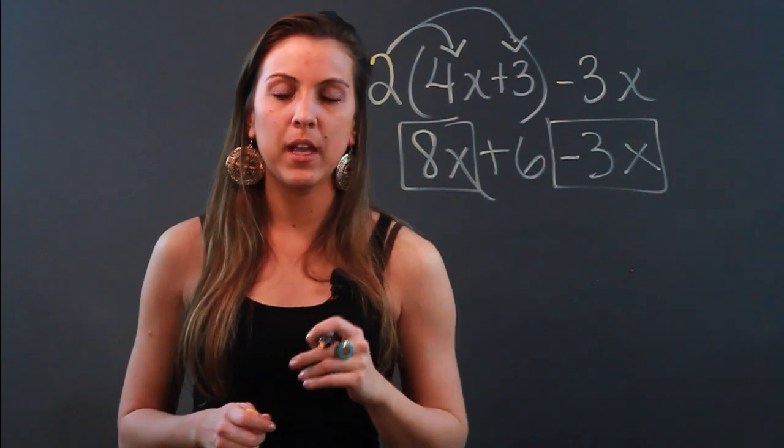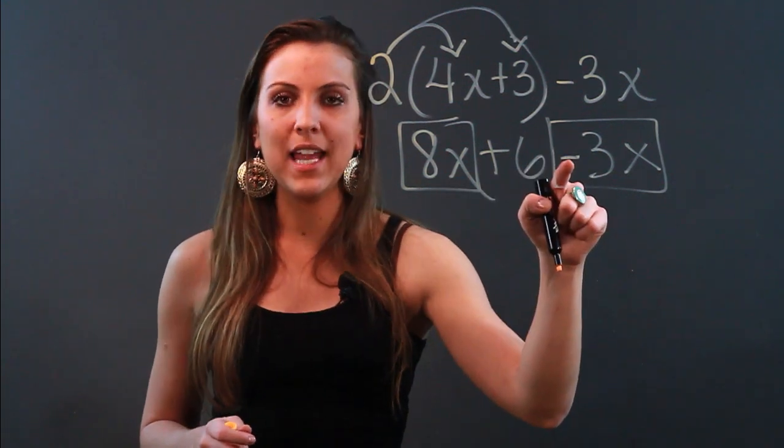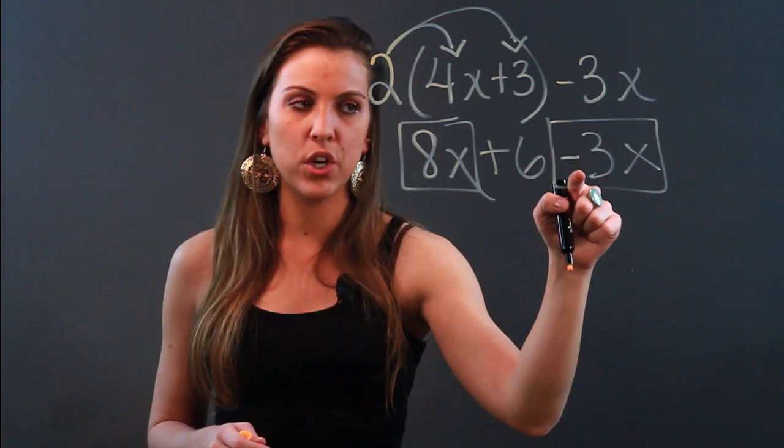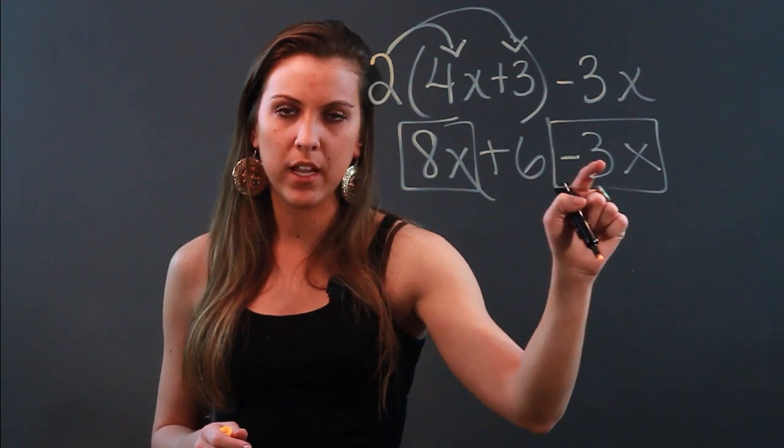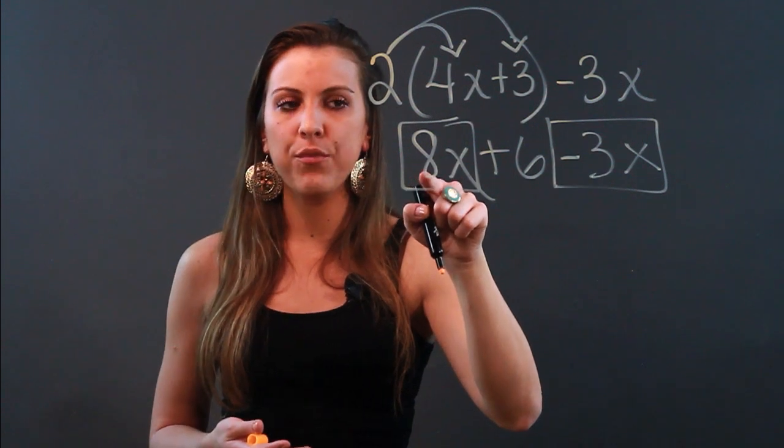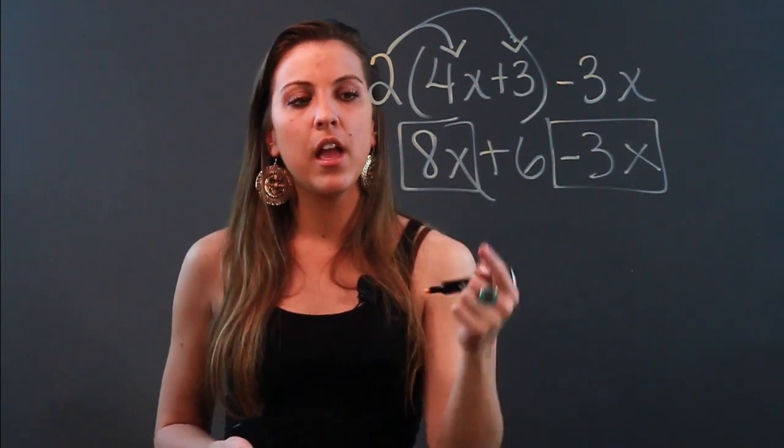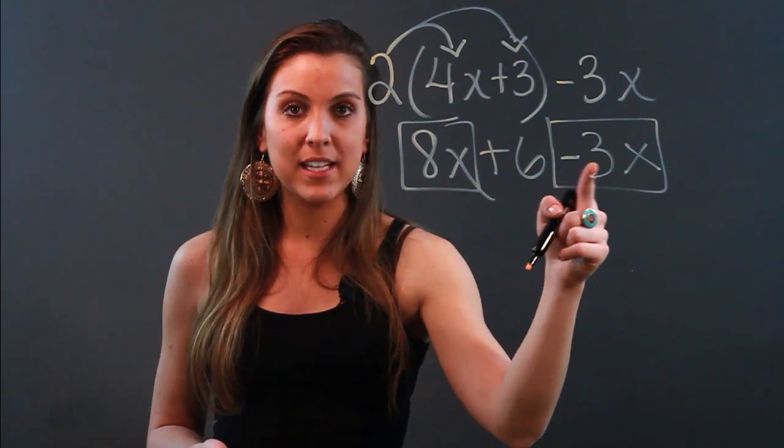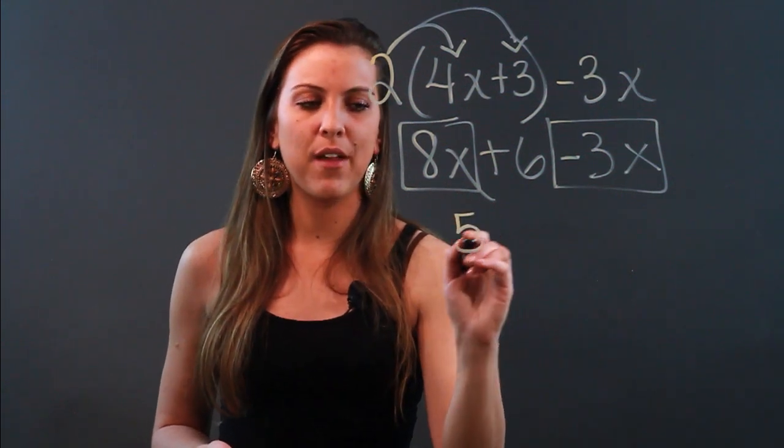The most important thing about combining like terms is that you take the sign before the term. So every term has to carry the sign before it. Think of it as its little leash. The 8 doesn't have one because it's the lead coefficient, but that just means that it's positive. So I'm doing 8x minus 3x, which is 5x.